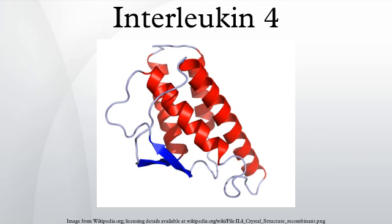IL-4 induces B-cell class switching to IgE, and upregulates MHC class II production. IL-4 decreases the production of Th1 cells, macrophages, IFN-gamma, and dendritic cell IL-12. Overproduction of IL-4 is associated with allergies.